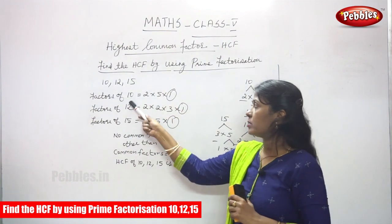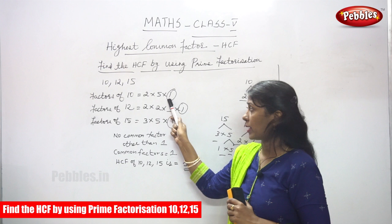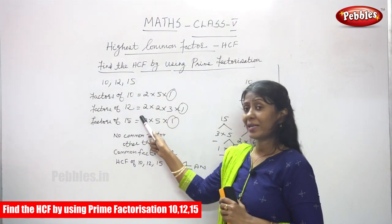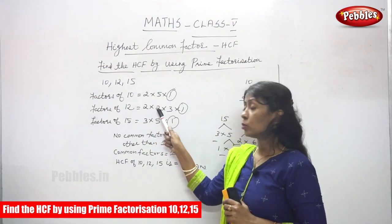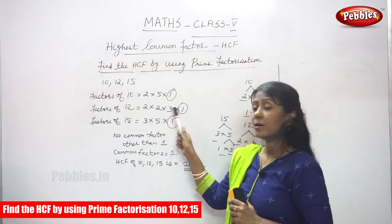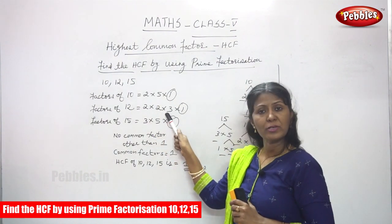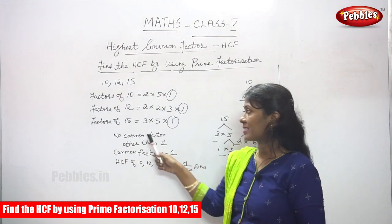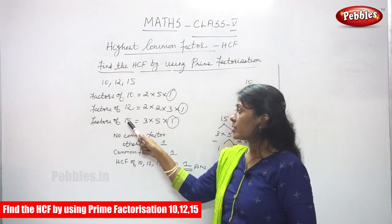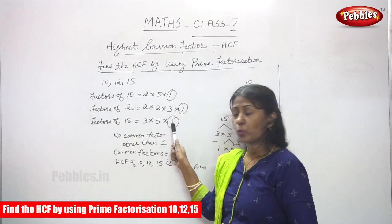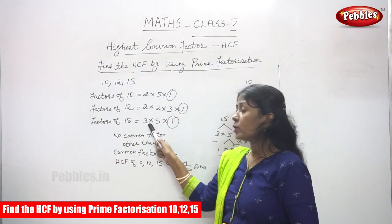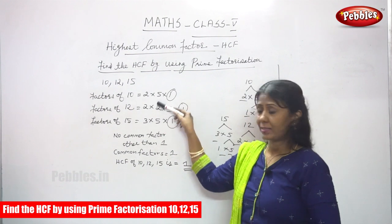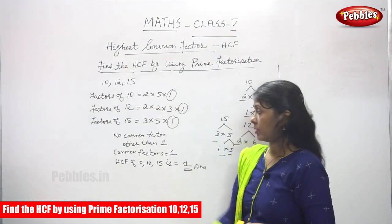Factors of 10 is 2 into 5 into 1 — so 2 into 5 is 10, and 10 into 1 is 10. Factors of 12 is 2 into 2 into 3 into 1 — so 2 into 2 is 4, 4 into 3 is 12, and 12 into 1 is 12. Factors of 15 is 3 into 5 into 1 — so 3 into 5 is 15, and 15 into 1 is 15.